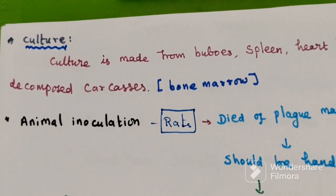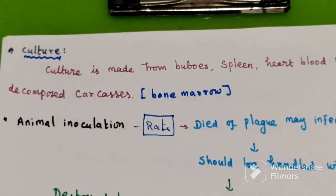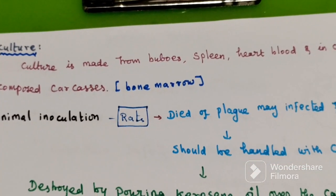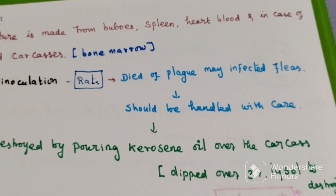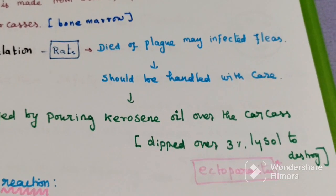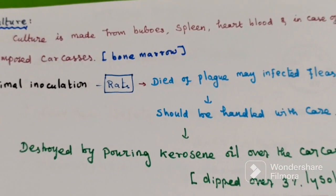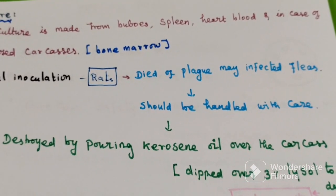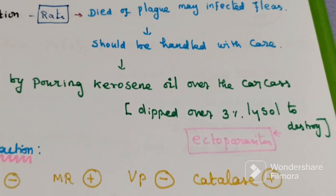Culture is made from buboes, spleen, heart, blood, and in case of decomposed carcass, particularly from the bone marrow. Next, animal inoculation using rats. A rat that dies of plague may carry infected fleas, so they should be handled with care. They can be destroyed by pouring corrosive oil over the carcass, and the carcass dipped in over 3% Lysol to destroy ectoparasites.